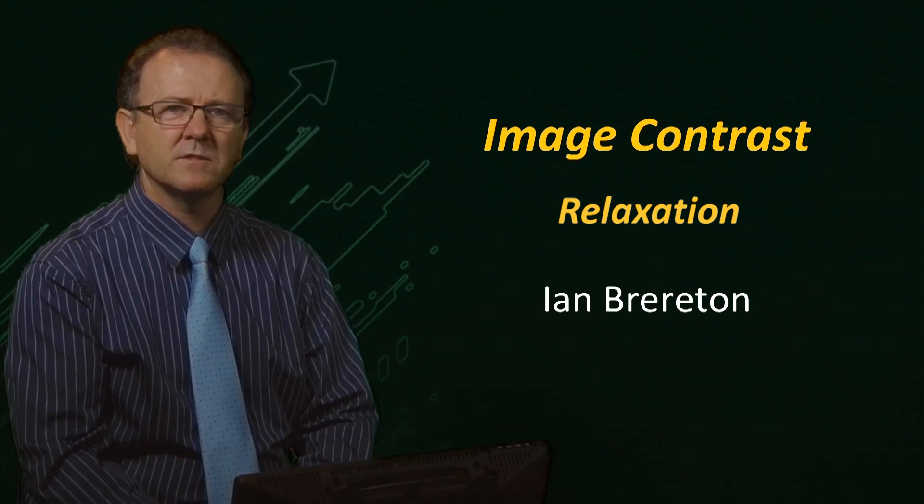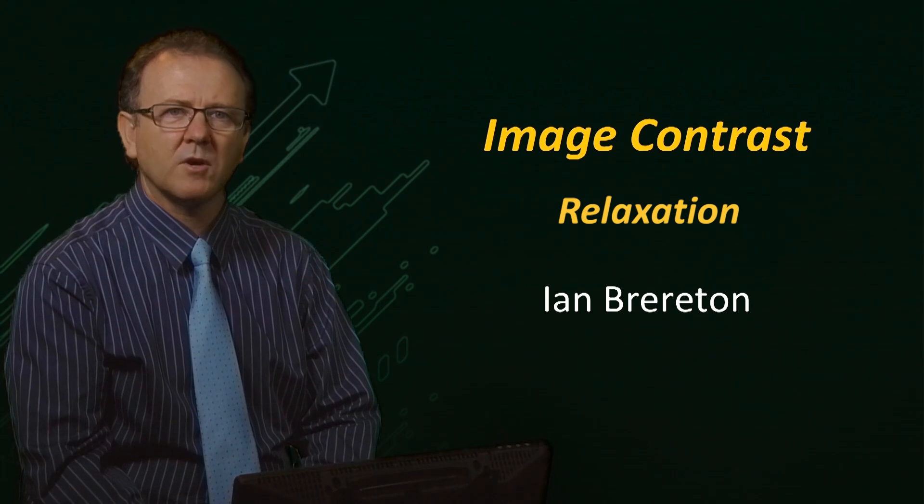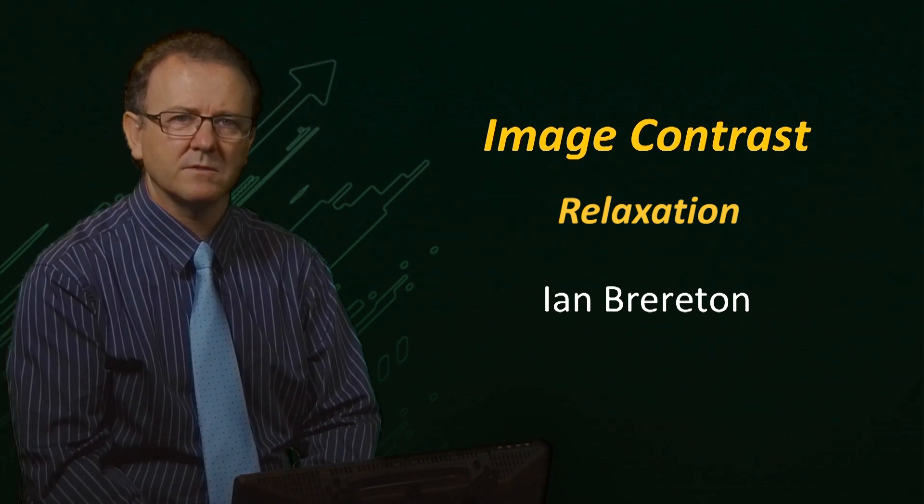Hello everyone. So far we have seen how an MR image is produced using field gradients to spatially encode the signal in three directions and learnt about how the raw data is processed to generate a two-dimensional image. We have introduced the relaxation properties of the nucleus spin and shown how signal is lost through dephasing and longitudinal magnetization recovers after excitation of the spins. In this final video on the fundamental principles of MRI, we will describe how those relaxation processes provide us with a mechanism to manipulate the contrast between different tissue types within the image.